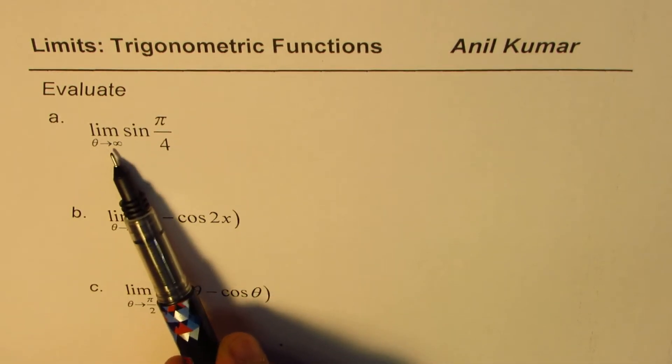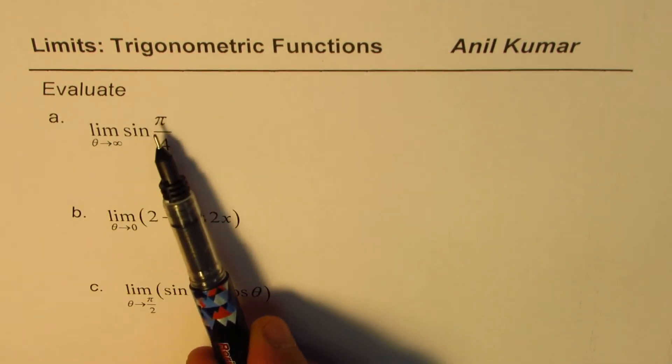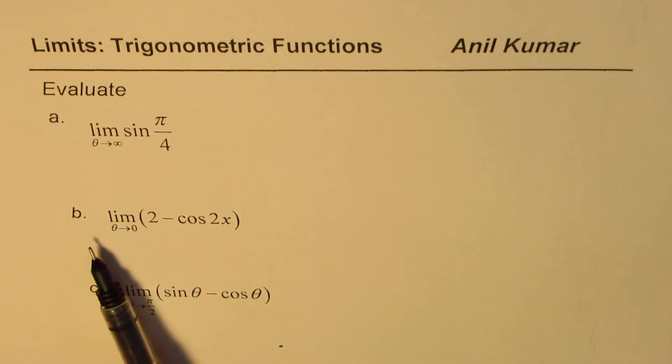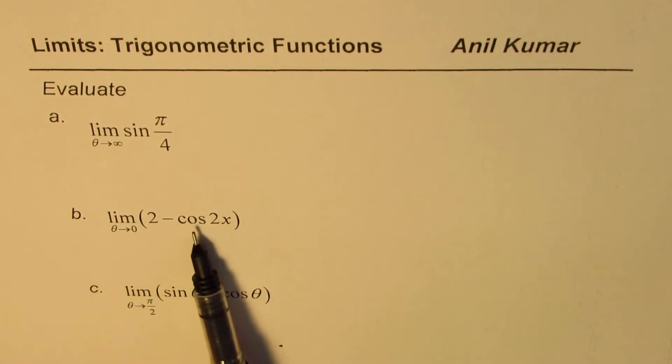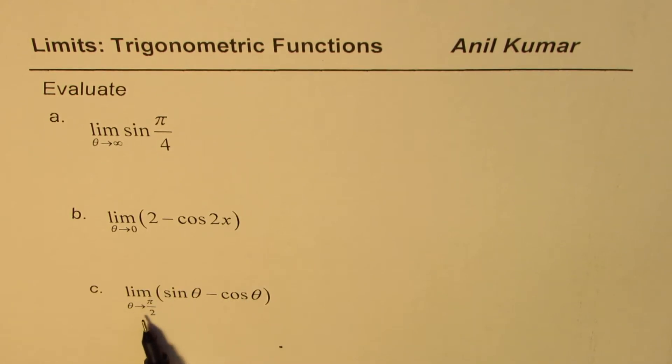The first one is limit when theta approaches infinity for sine pi by 4. And then we need to find limit when theta approaches 0 for 2 minus cos 2x. And then we have limit when theta approaches pi by 2 for sine theta minus cos theta.